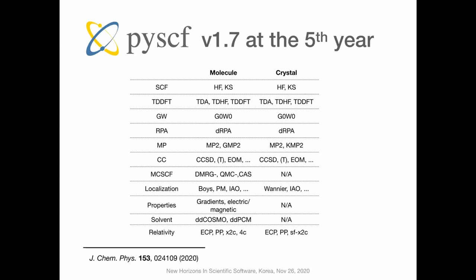After five years of development, you can now find a long list of features available in this package, including regular quantum chemistry methods for molecules and even some cutting-edge scientific studies for molecules. About three years ago we introduced features targeting crystal systems and implemented regular mean field theory, correlation methods, and even some property calculations for crystals. Most of the features and technical details and program designs are available in a paper published in the Journal of Chemical Physics earlier this year.